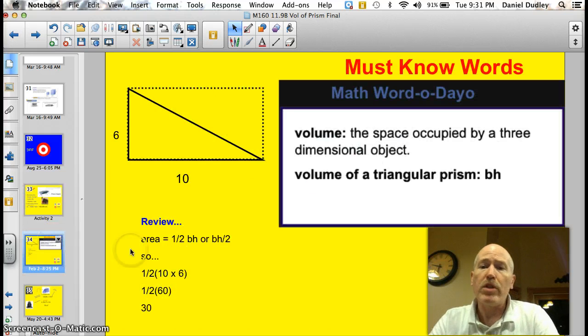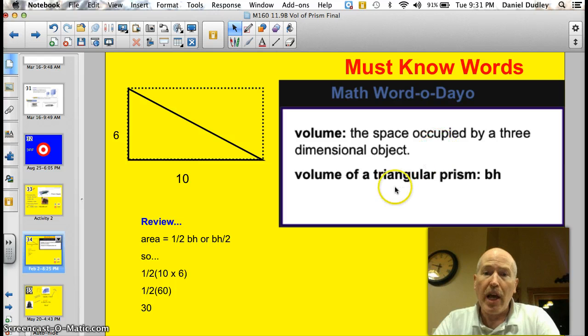Let's get to our must-know words for tonight. First of all, we have volume. That's the space occupied by a three-dimensional object. And then, we have volume of a triangular prism. That's just base times height.